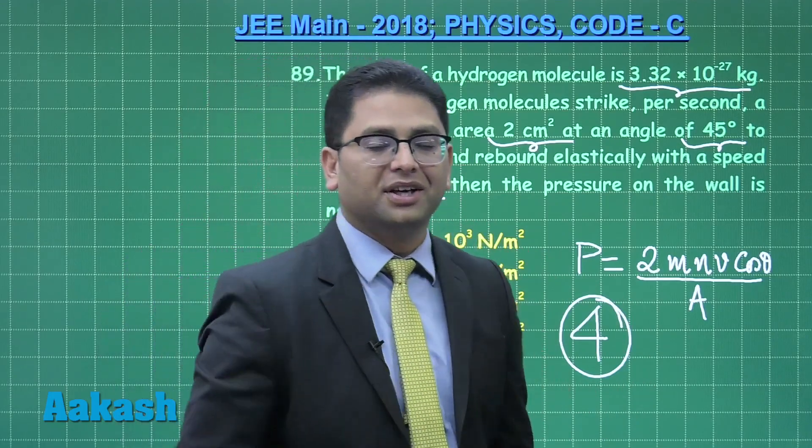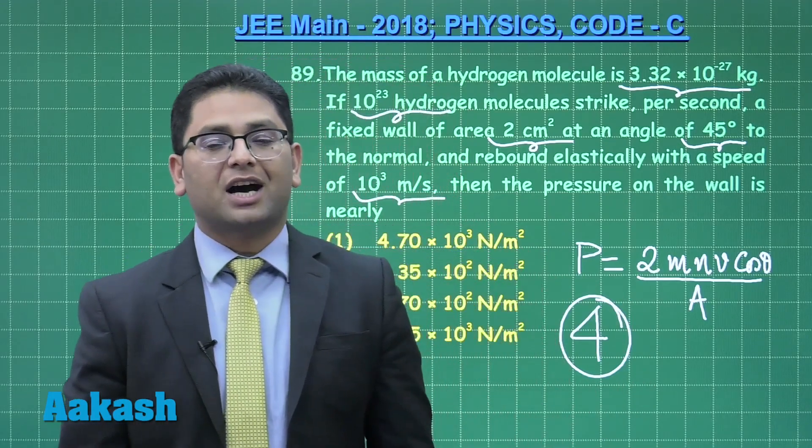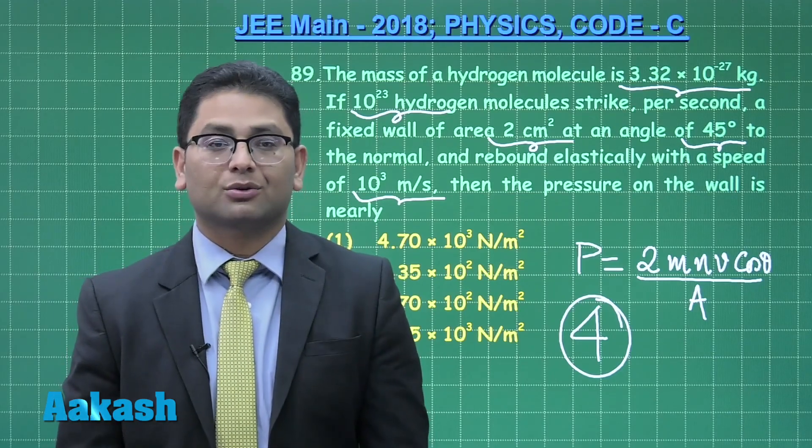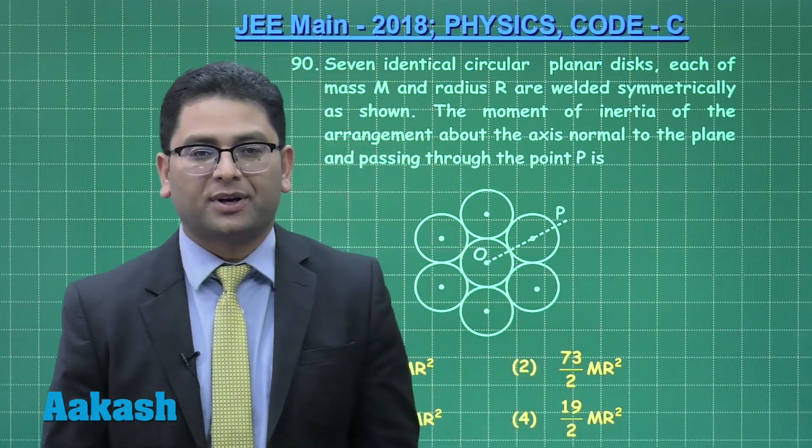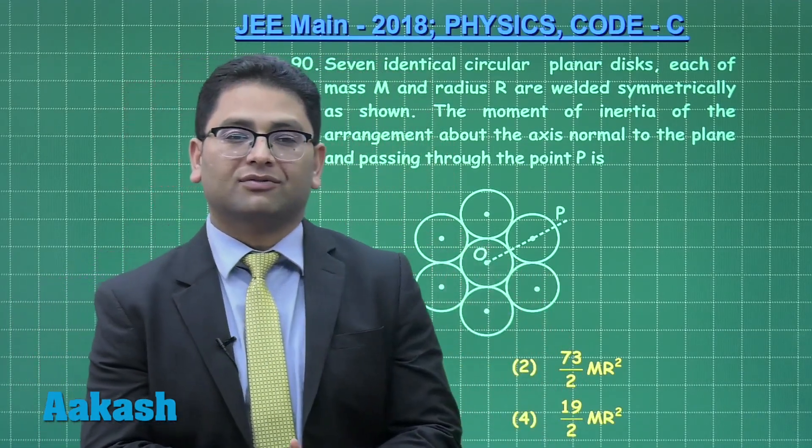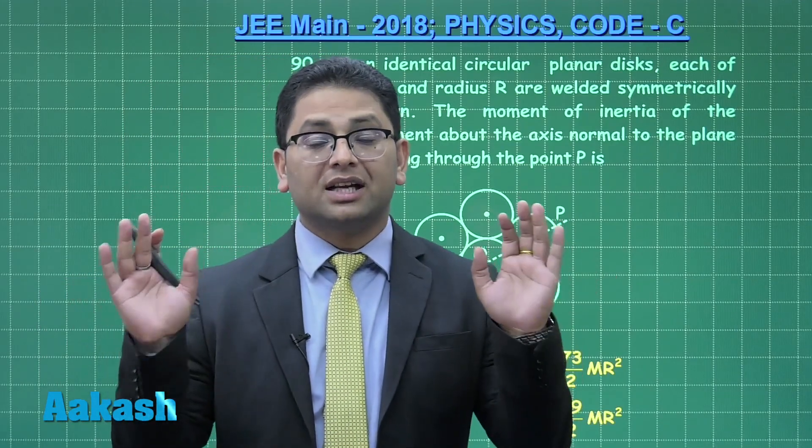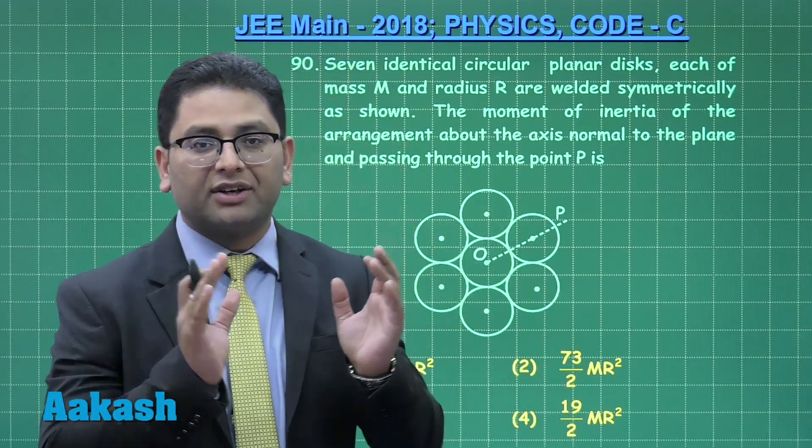Let's now move to the final question, question number 90, from rotation. So essentially rotation has stood up to its expectation. This is the second question from the topic, though the question levels are quite easy and straightforward.